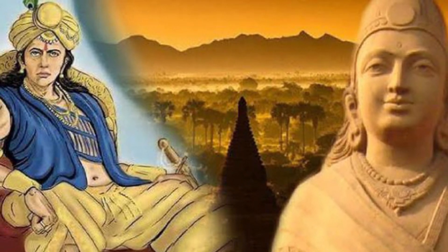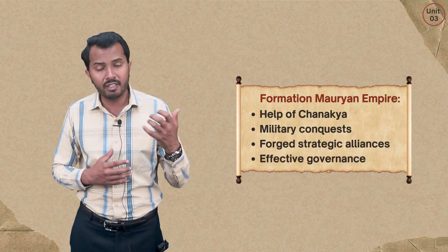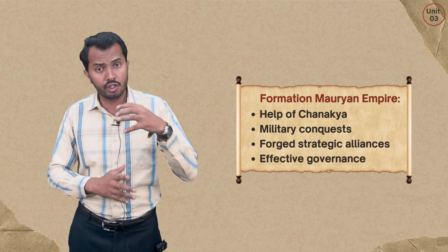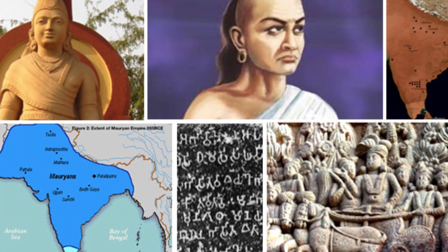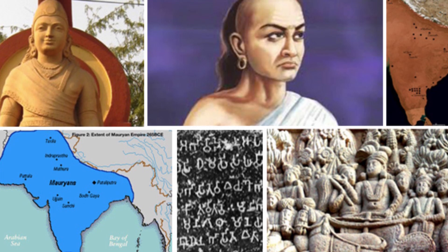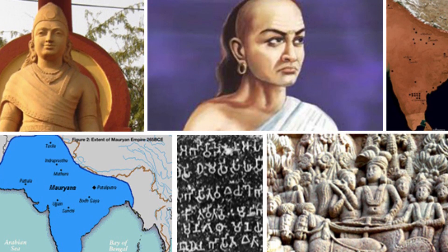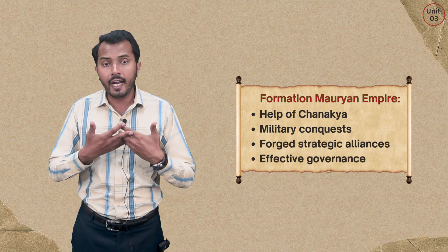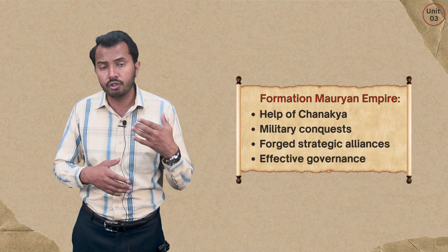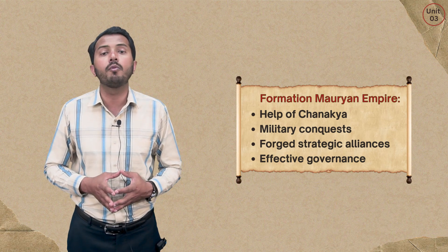The third factor was that he forged strategic alliances with local rulers to defeat the Nanda dynasty, which was the ruling dynasty in Hindustan at that time. Without displacing the Nanda dynasty, it was impossible for him to establish a new dynasty. The fourth factor, which was also helpful, was his effective governance. These were the circumstances which actually helped Chandragupta Maurya to establish the new empire known as the Mauryan Empire.